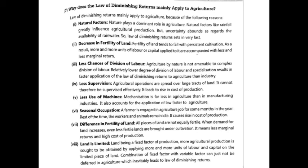Next is why does the law of diminishing returns apply to agriculture. First point: natural factors — nature plays a dominant role in agriculture. Natural factors like rainfall greatly influence agricultural production, leading to diminishing returns.